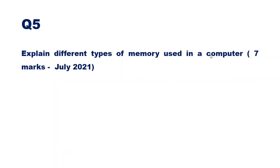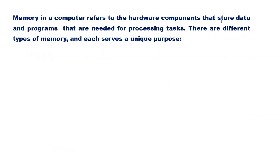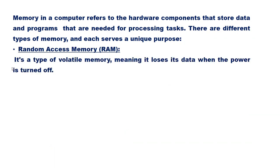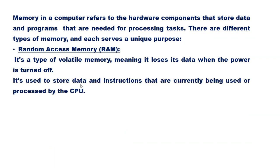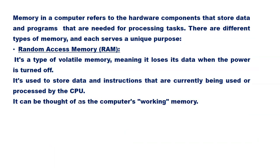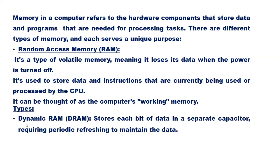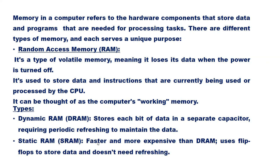Question 5: Explain different types of memory used in a computer. Memory refers to the hardware components that store data and programs needed for processing tasks. Random access memory (RAM) is volatile memory — it loses its data when power is turned off — and is used to store data and instructions currently being used by the CPU, acting as the computer's working memory. Types of RAM include Dynamic RAM (DRAM), which stores each bit in a separate capacitor requiring periodic refreshing, and Static RAM (SRAM), which is faster and more expensive, uses flip-flops, and doesn't need refreshing.